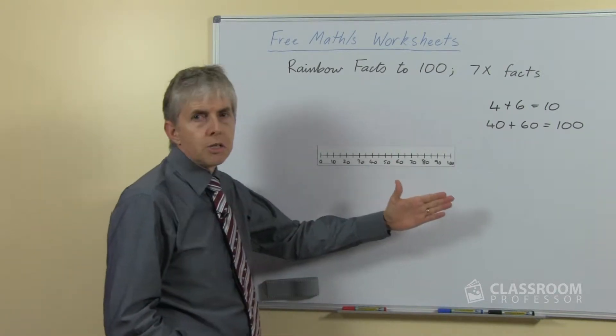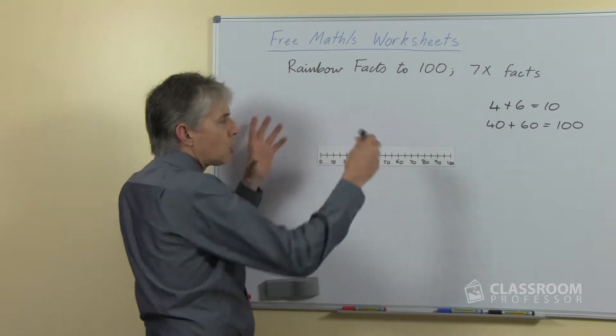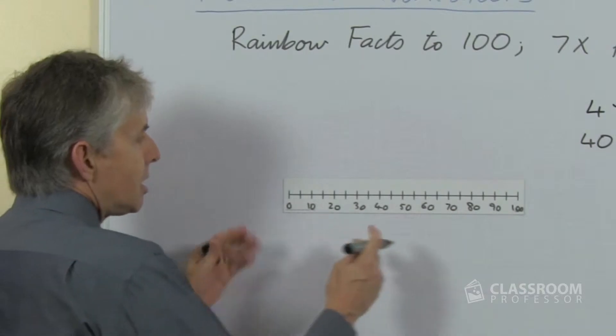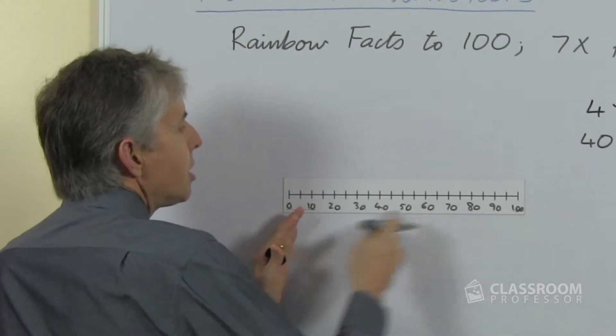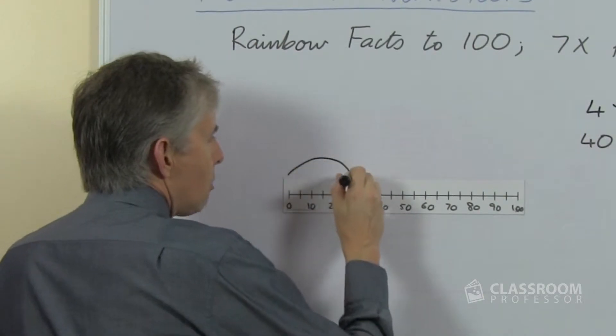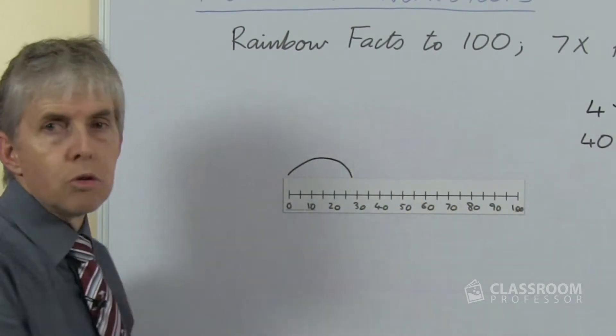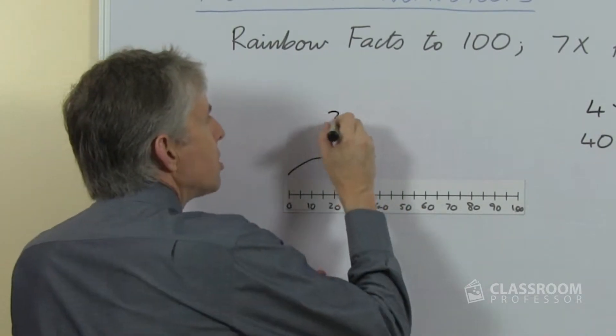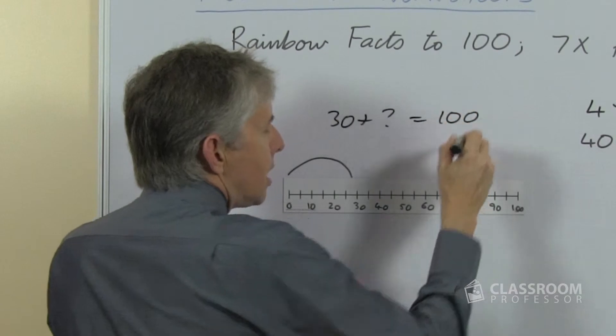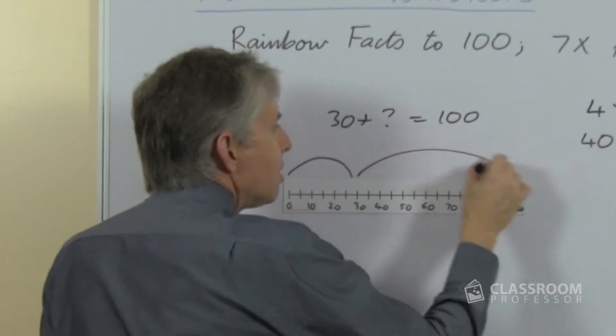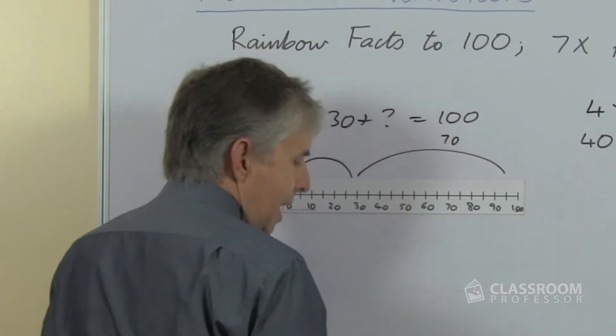We can use a number line to show the same thing. So we're not drawing the rainbow this time, although you could possibly do that, but just the idea that we've got numbers up to a hundred here. If this is all the numbers to a hundred, if we said let's start with a hop to thirty, how much more do we need to get up to a hundred, or thirty plus what equals one hundred? That's the idea of a rainbow fact up to a hundred. But that's only looking at multiples of ten.